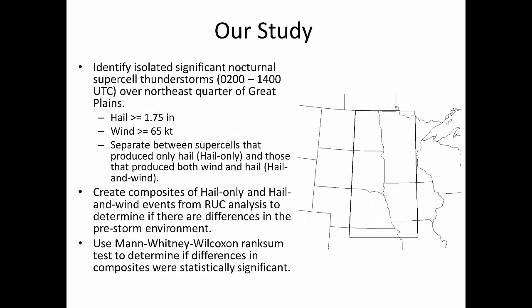So our study — we did a two-part study, and this is the first part that I'll present, and then Phil will present the second part. What we did is we identified isolated significant nocturnal supercells. We weren't looking for mesoscale convective systems, DRATIOs, or any well-organized convective system — we were looking for more isolated supercells in a nocturnal sense. Significant means golf ball or larger hail and wind greater than 65 knots. We then separated that database into two categories: supercells that produced hail and wind, and supercells that produced hail only.